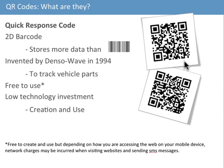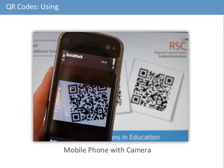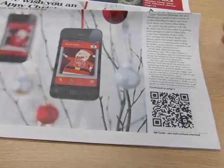QR codes, or quick response codes, are two-dimensional barcodes. They were developed by a company called Denso Wave in 1994 to track vehicle parts. One advantage they have over 1D barcodes is that they can store a lot more information. Denso Wave owns the patent, but it's free to create and use QR codes. To read them, all you need is a mobile phone with free decoding software, or even a webcam.